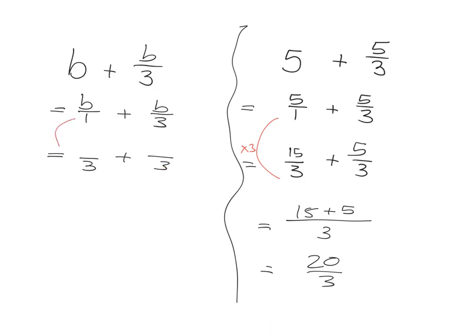What have we done to the 1 to get to a 3? We've multiplied by 3. So what we do to the bottom we must do to the top. So we must take this thing here and also multiply it by 3.